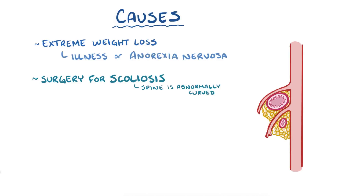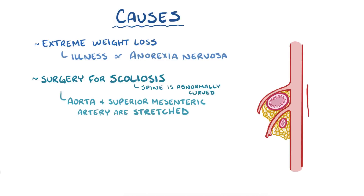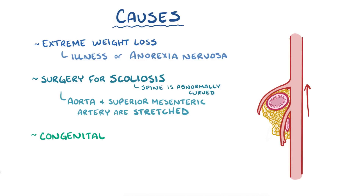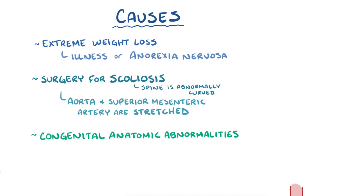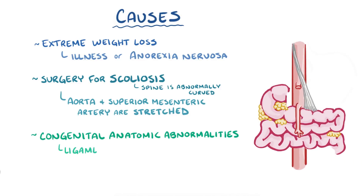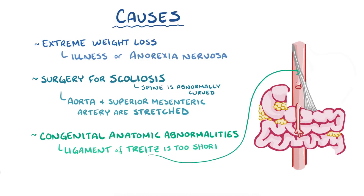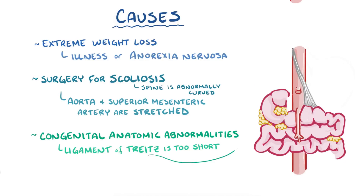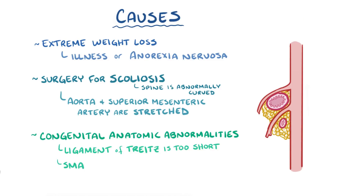During the surgery, the spine is straightened, and the aorta and superior mesenteric artery get stretched upward, causing the aorto-mesenteric angle to narrow. Rarely, there can be congenital anatomic abnormalities, like when the ligament of Treitz — which holds the duodenum in place — is too short, or when the superior mesenteric artery branches off the aorta further down than its usual spot.